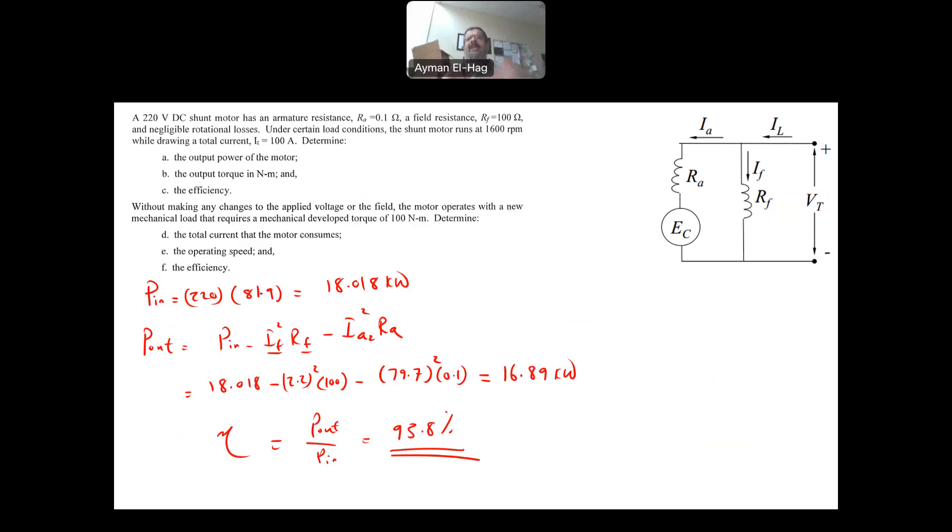So these are the two main scenarios of the DC machine. You are given certain conditions, you want to find certain parameters, and then you are changing the conditions, either we change the torque by itself, or we change the field.